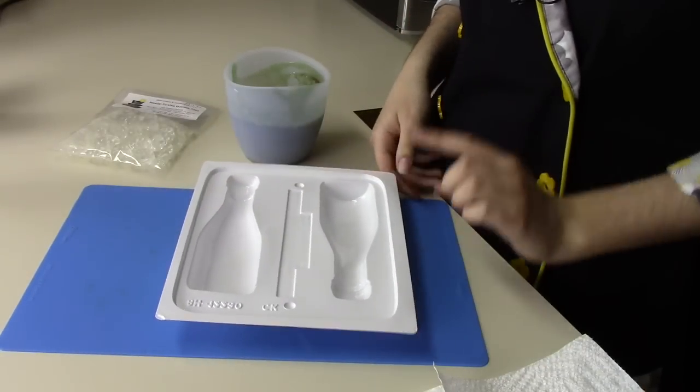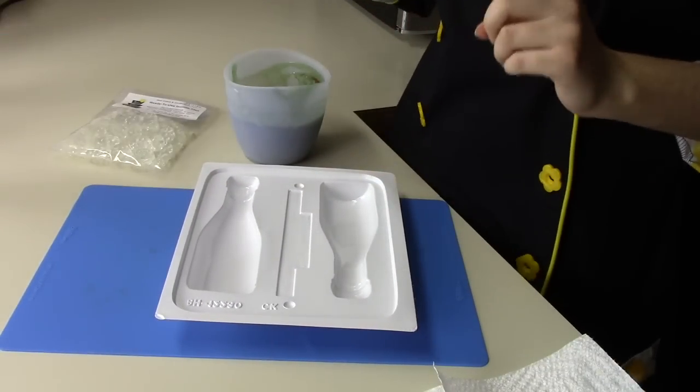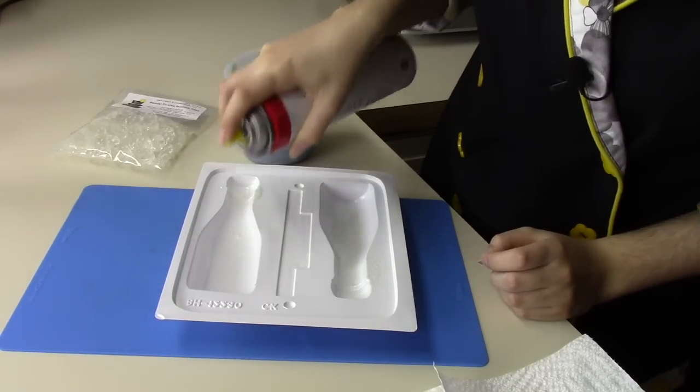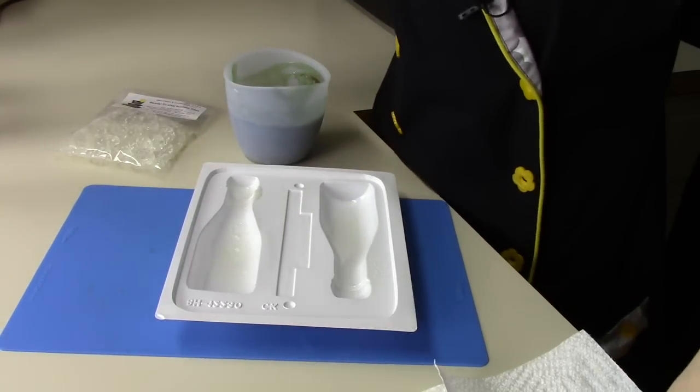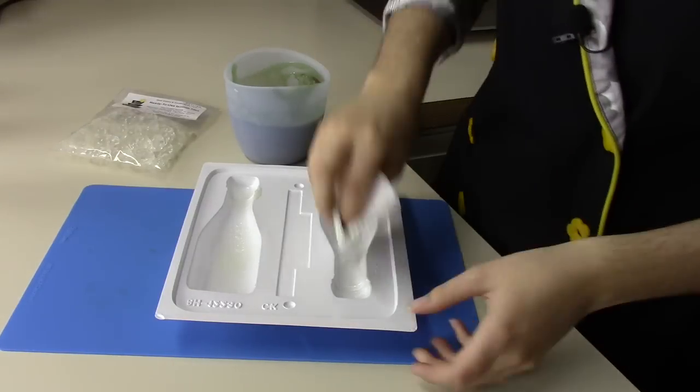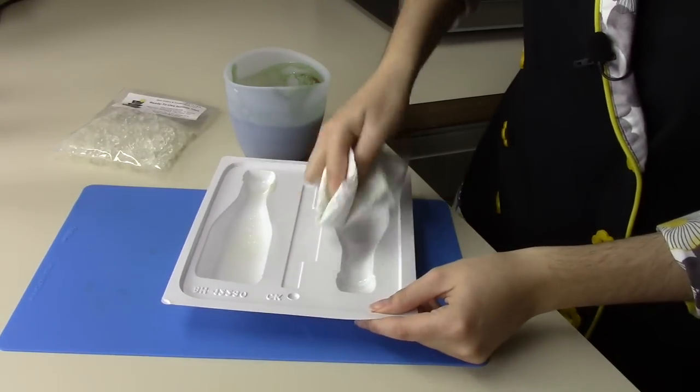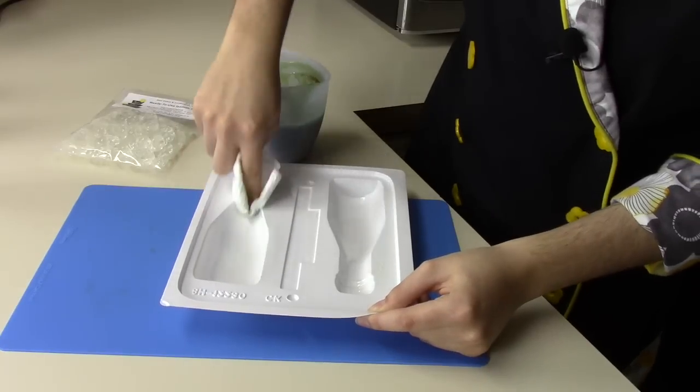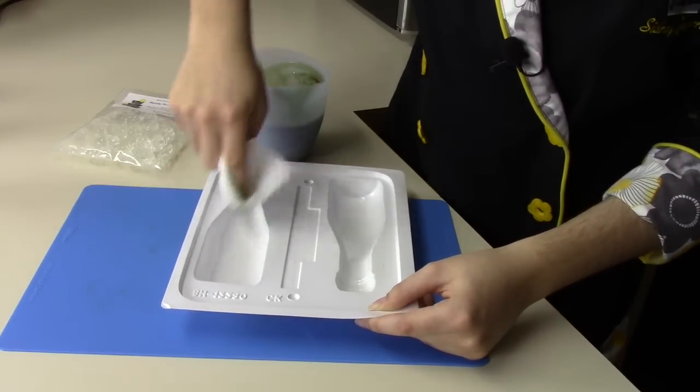The first thing you always want to do when you're using a hard candy mold is spray it with a little bit of cooking spray. It doesn't matter what kind of oil, as long as it's pure oil, not the baking spray because that has powder in it. And I just kind of spread and wipe out any excess in my mold before I pour it.